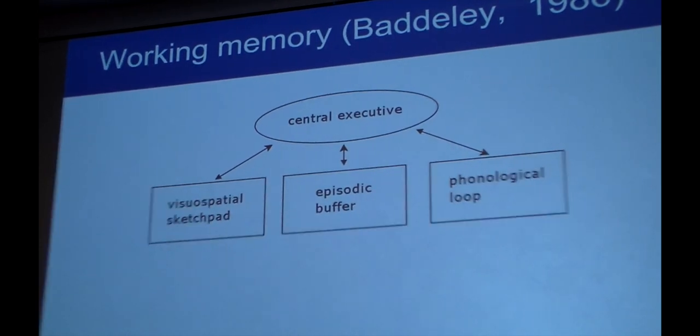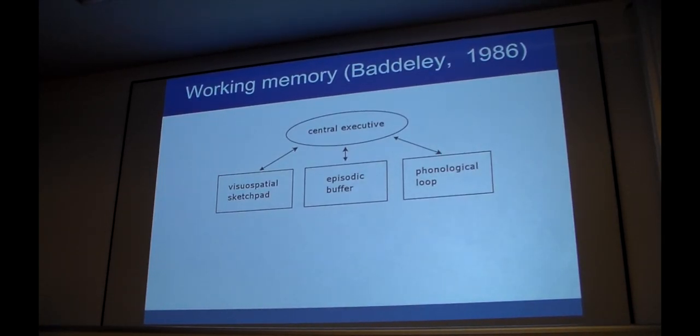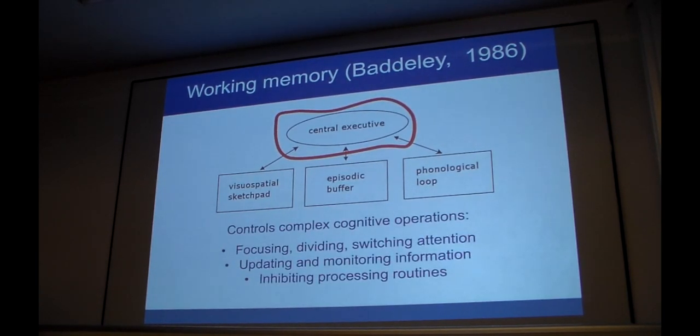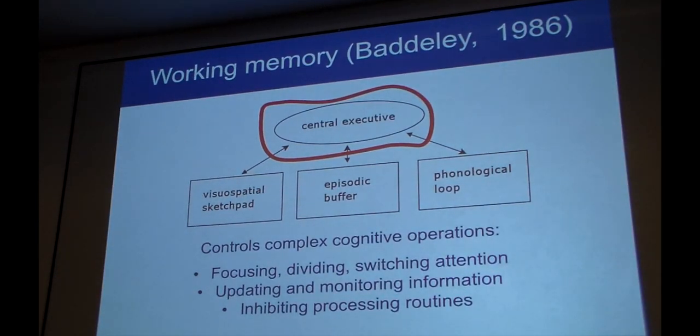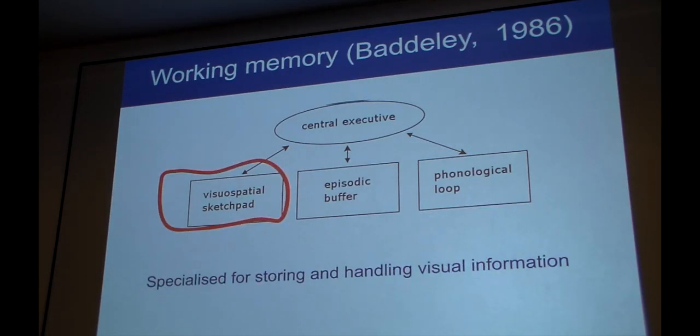For the purposes of our research, we adopted Baddeley's working memory model. This model describes working memory in terms of a supervisory system, the central executive, and also three slave systems: the visual-spatial sketchpad, the episodic buffer, and the phonological loop. The central executive controls complex cognitive operations such as focusing, dividing, and switching attention, updating and monitoring information, and also inhibiting processing routines. The phonological loop is responsible for temporary retention and manipulation of verbal information. And finally, the visual-spatial sketchpad is specialized for storing and handling visual information.